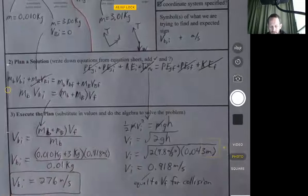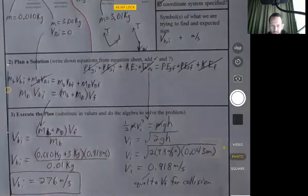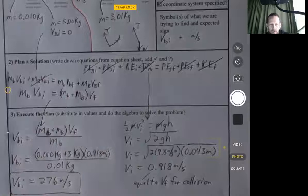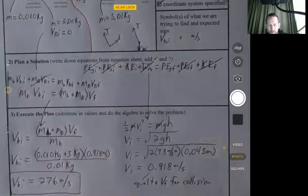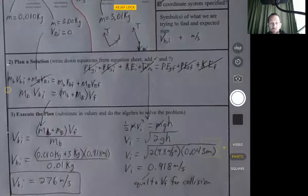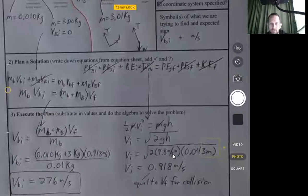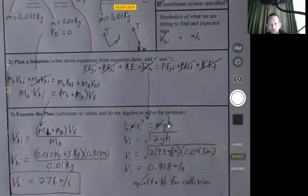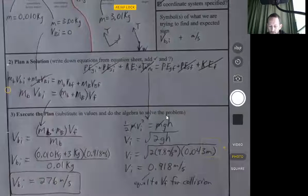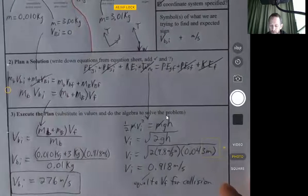So that's a reasonable value. That's roughly 550 miles per hour. Double meters per second to get to miles per hour as a rough estimate, but 500 or 600 miles per hour is a reasonable value for a bullet to be traveling.